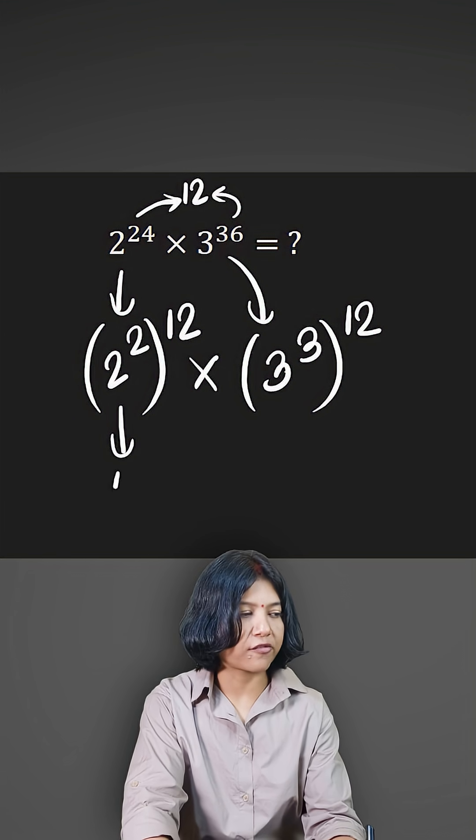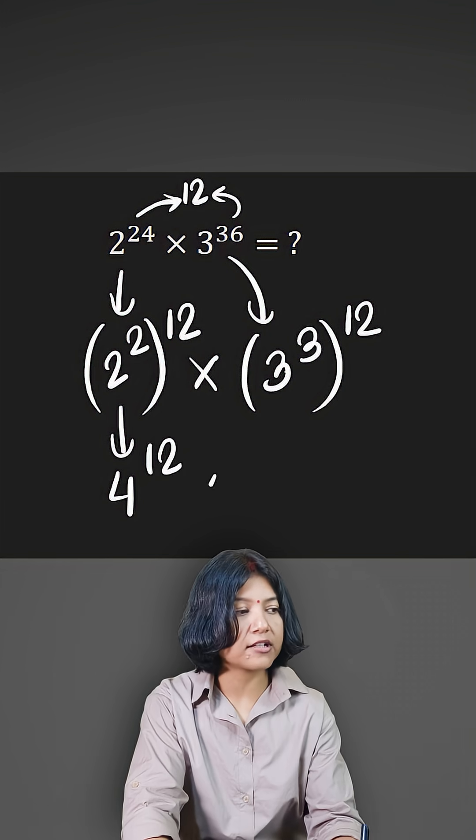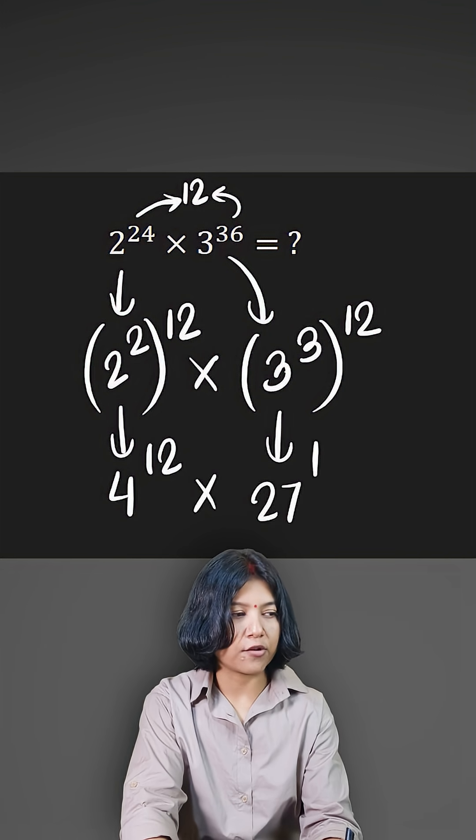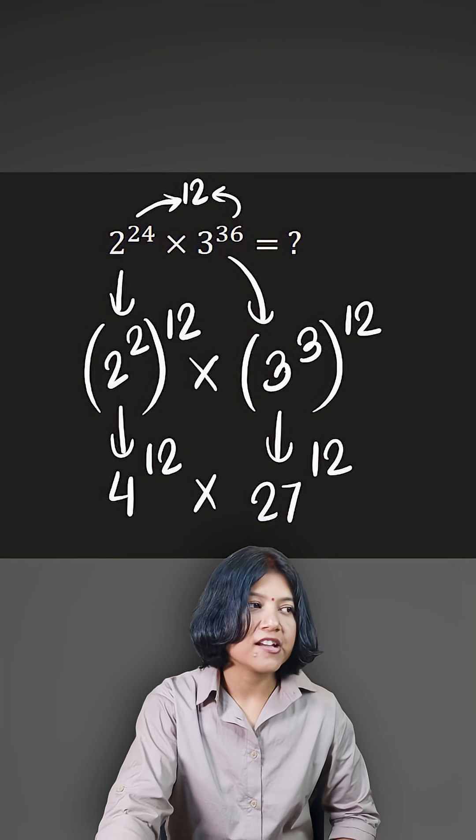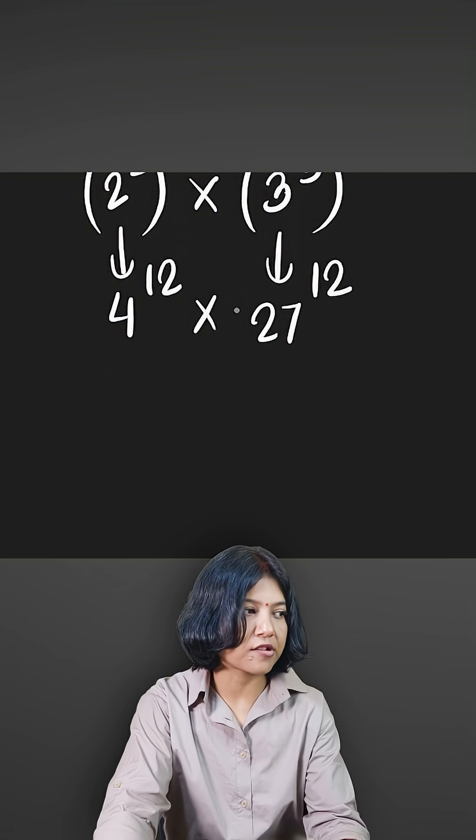So 2 squared is 4. We have 4 to the power of 12. And 3 cubed is 27 to the power of 12. So same powers—you can bring the numbers together now, so they can be multiplied first and then raised to the common power together.